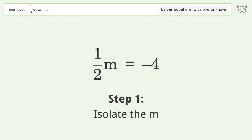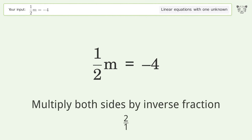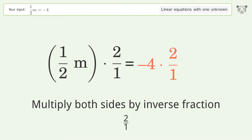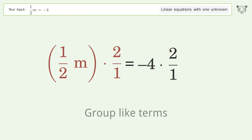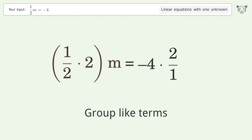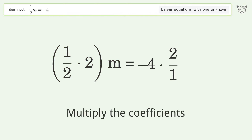Isolate the m — multiply both sides by the inverse fraction 2 over 1. Group like terms. Multiply the coefficients.